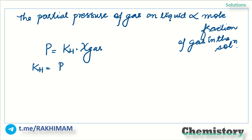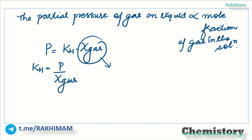So KH equals P divided by the mole fraction of the gas. Now, regarding this mole fraction of the gas — we are expressing the solubility of gas in terms of mole fraction in the solution. So mole fraction is essentially representing the solubility of the gas.